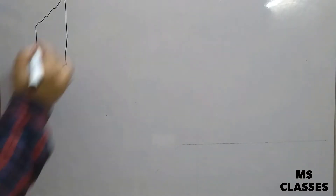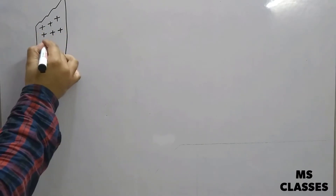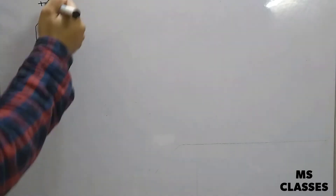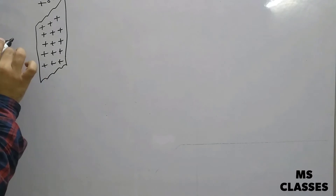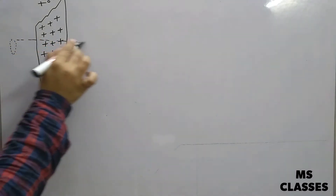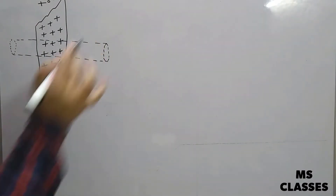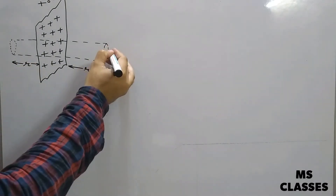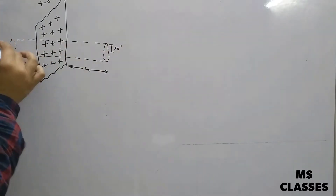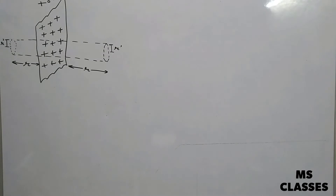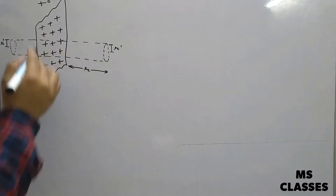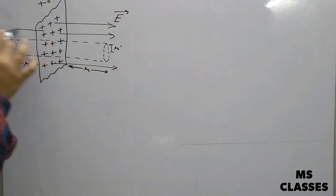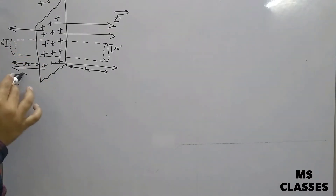Let's suppose we have an infinite plane sheet of charge of positive surface charge density sigma, which is distributed uniformly. We have a Gaussian surface which symmetrically covers it. The electric field lines have to be radially outwards on both sides.